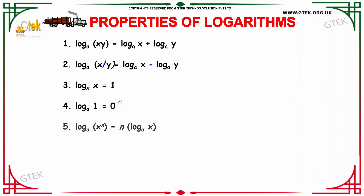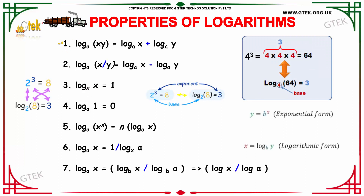Let us see a few properties of logarithms. Our first property says that log x times y to the base a is nothing but the addition of log x to the base a plus log y to the base a. The second property says that log x by y to the base a is nothing but log x to the base a minus log y to the base a.